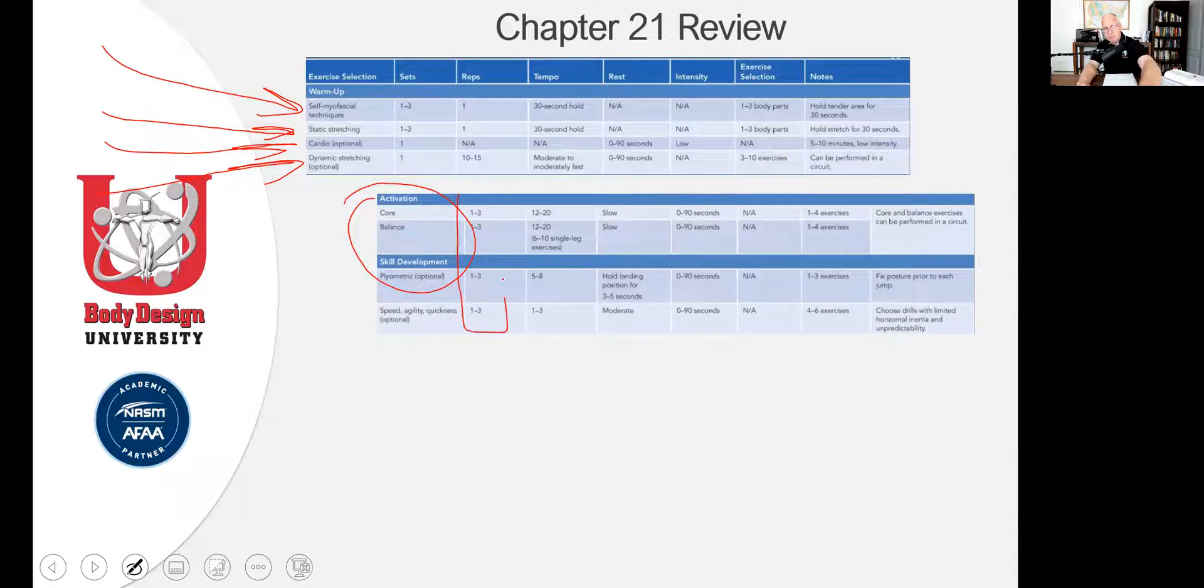You could break this into just the activation or just the skill development, but generally these guys are going to be very similar. So you can see the sets and the reps. Activation, which is core and balance, and then the skill development plyometric, by the way, you'll notice that they're optional in some of these phases. So this is what I do. I'll have students will literally cut things out and put them all on the same sheet, the way I'm doing it for you here. And that makes it a little bit more accessible academically, psychologically.